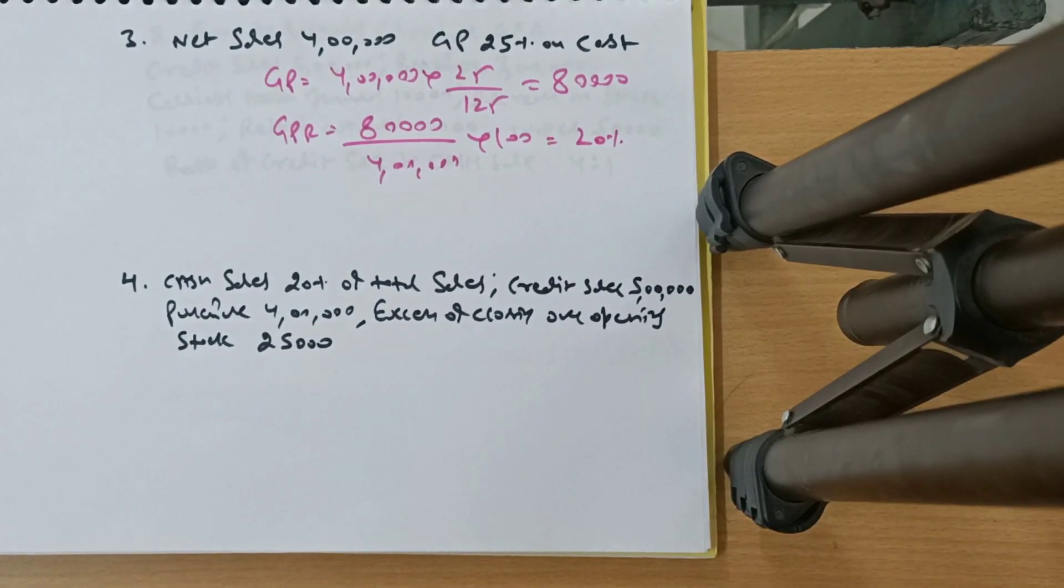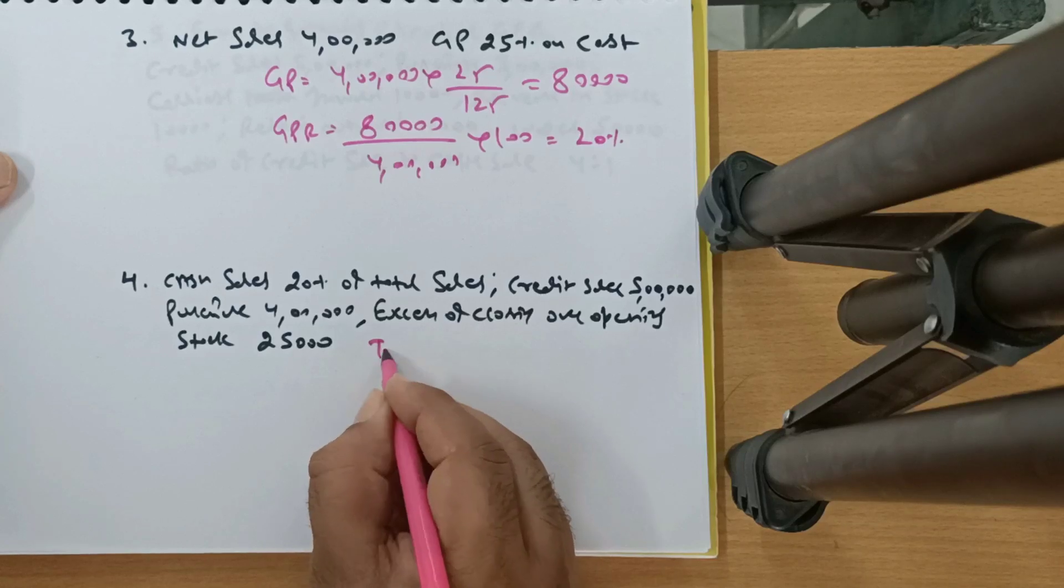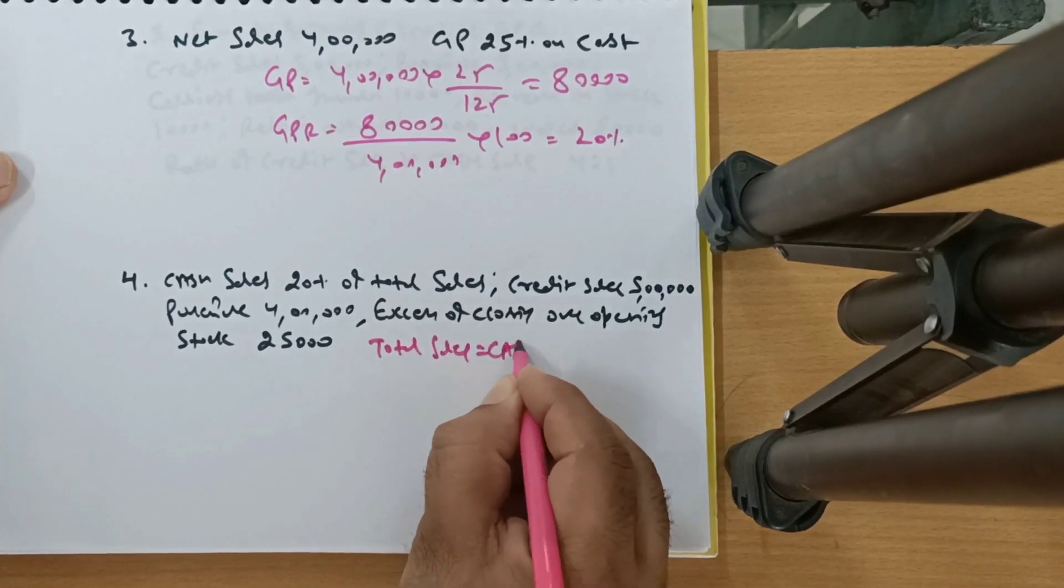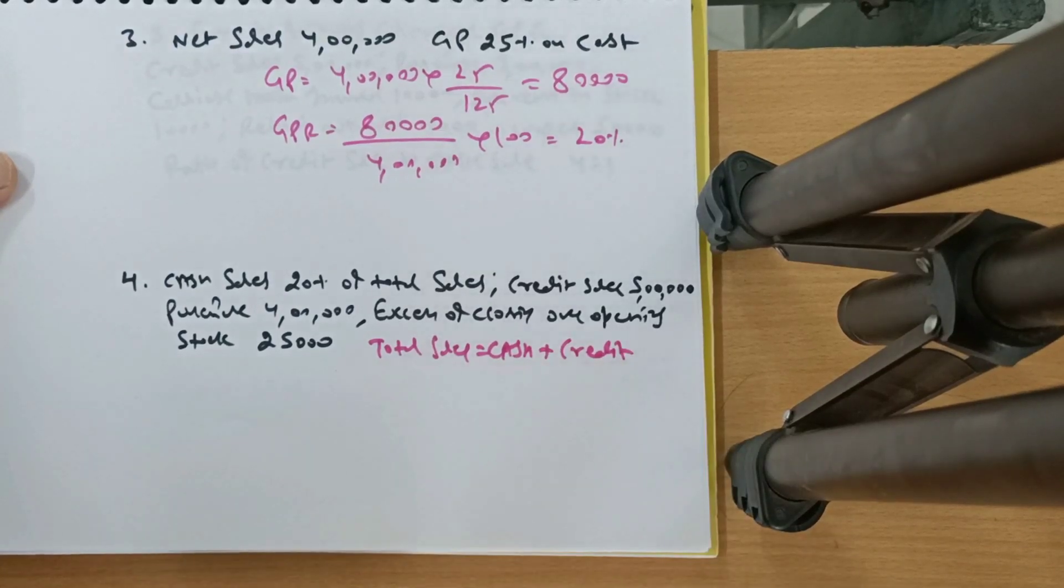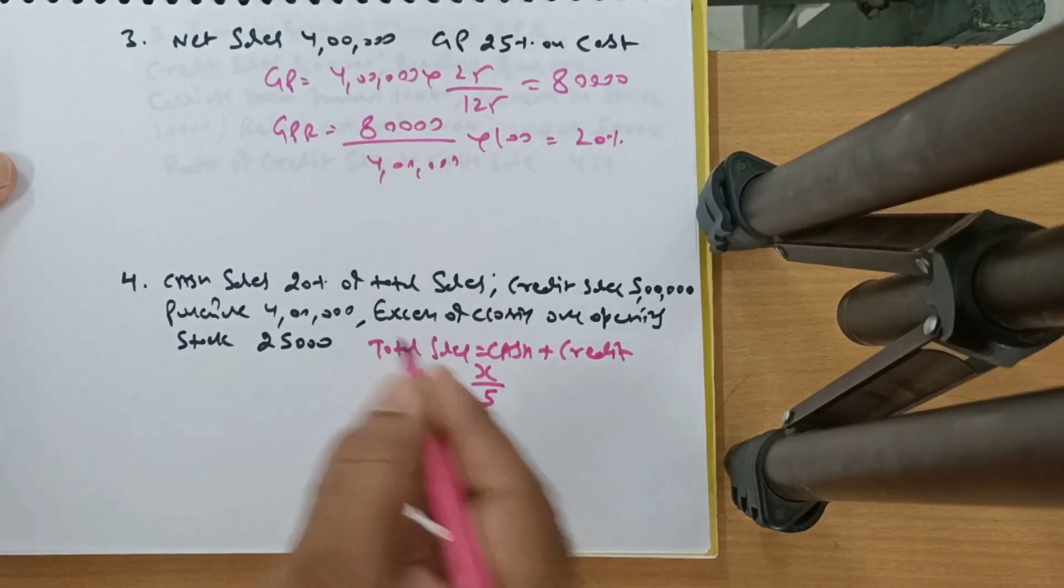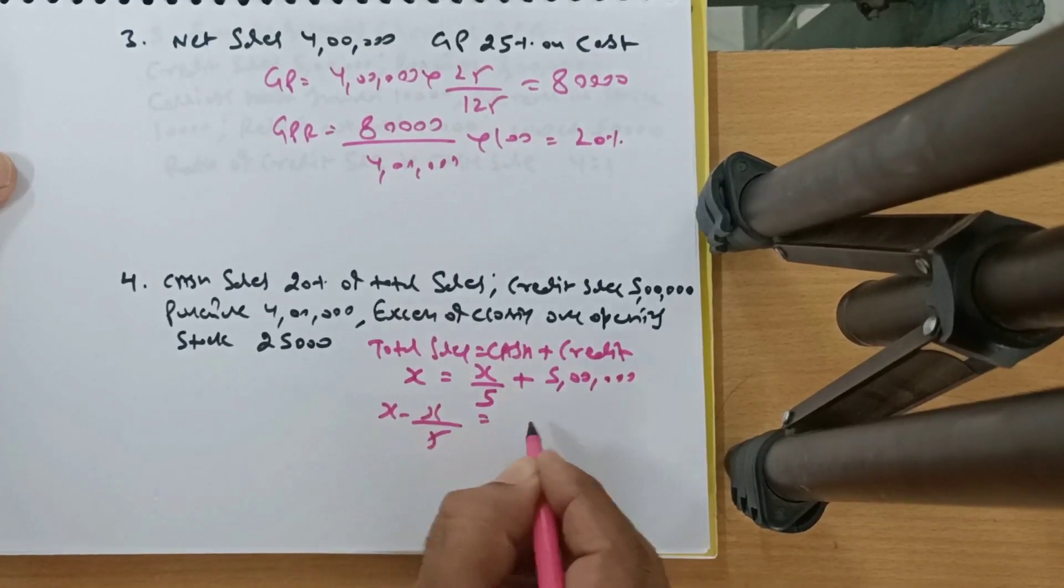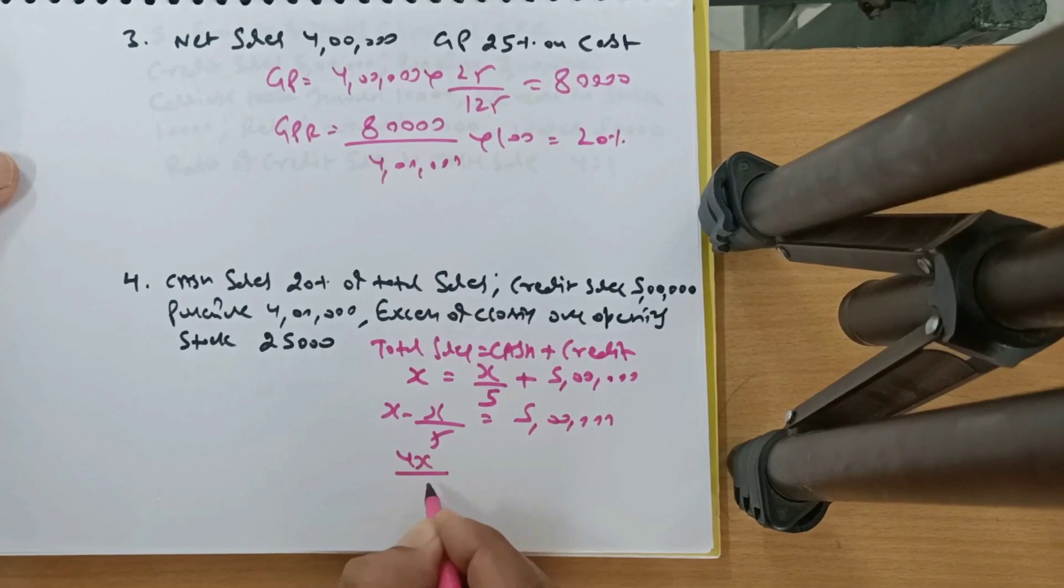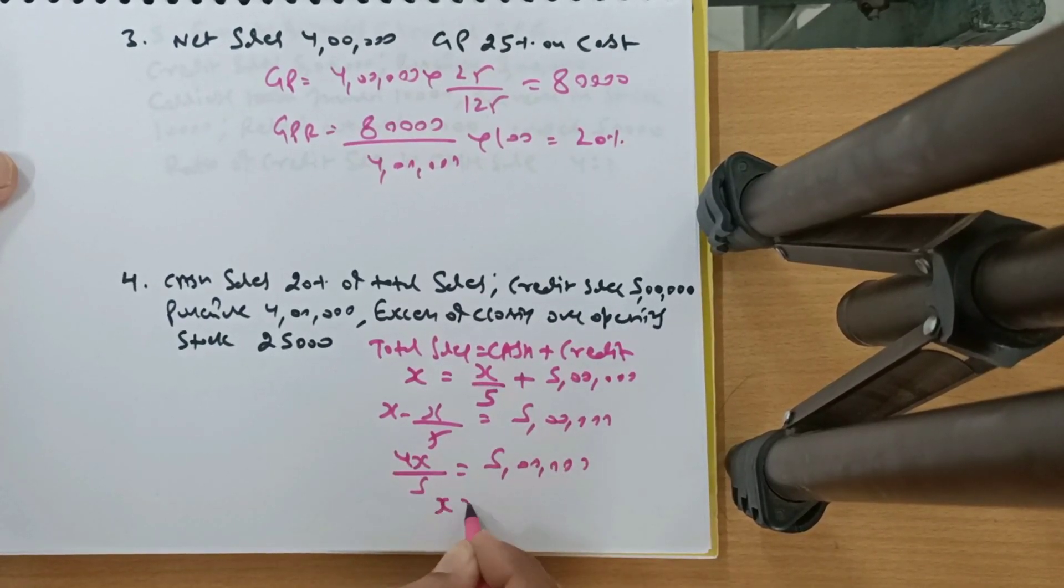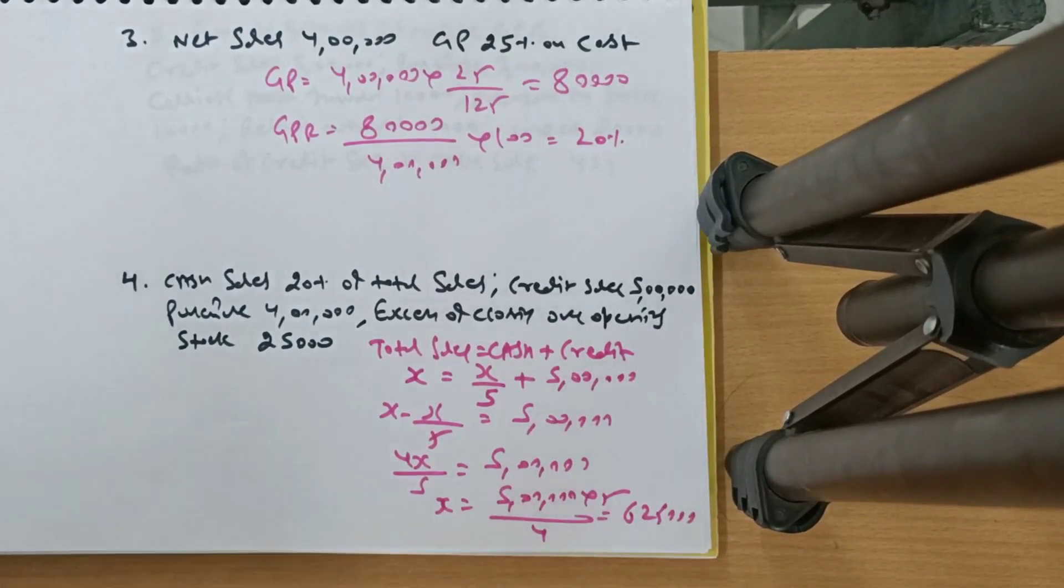Fourth question. Cash sale 20% of total sale, credit sale given, and many other things. So let's go for it. Total sales is always equal to cash sales plus credit sales, right? Cash sale 20% of total sale. Let the total sales be X. Cash will be X by 5, 20 by 100, 1 by 5. And credit sales amount given is 5 lakhs. If we solve this, 4X by 5 is equal to 5 lakhs. X is equal to 5 lakhs into 5 upon 4, it is going to be 6 lakh 25,000. So we have sales.